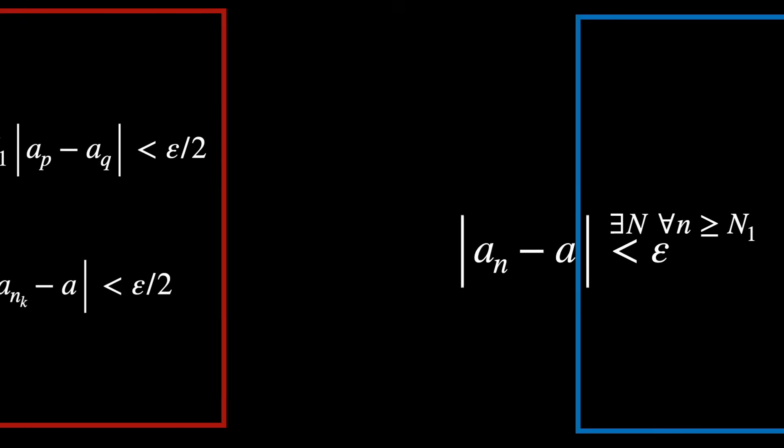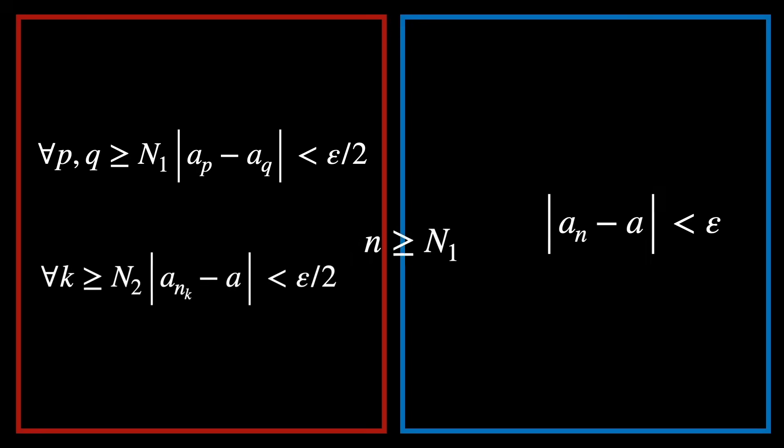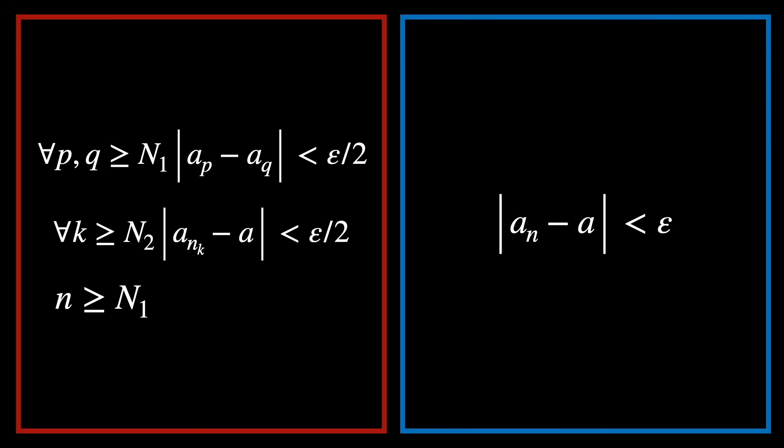By picking a specific value of capital N, namely n1, we no longer need to say there exists some n because we've already found one. Let's now apply the let move again as we did previously, which lets us drop the for all and we can just focus on a single arbitrary n.